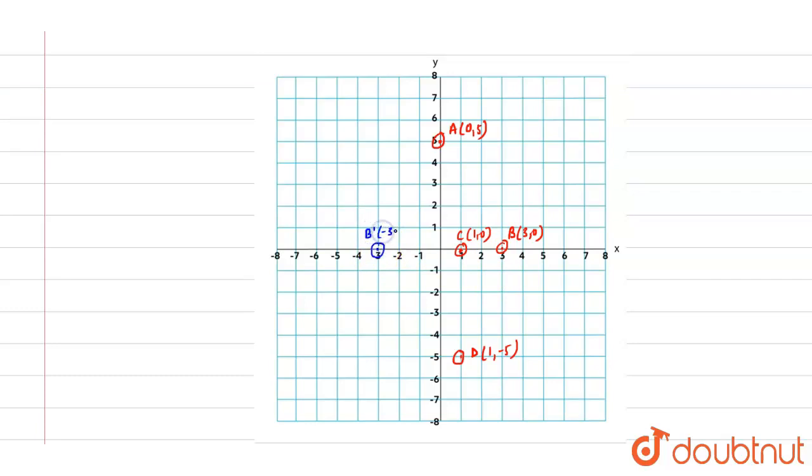For C, 1, 0 we will have the point -1, 0 again for the same reason. And then for D, we will have this point.